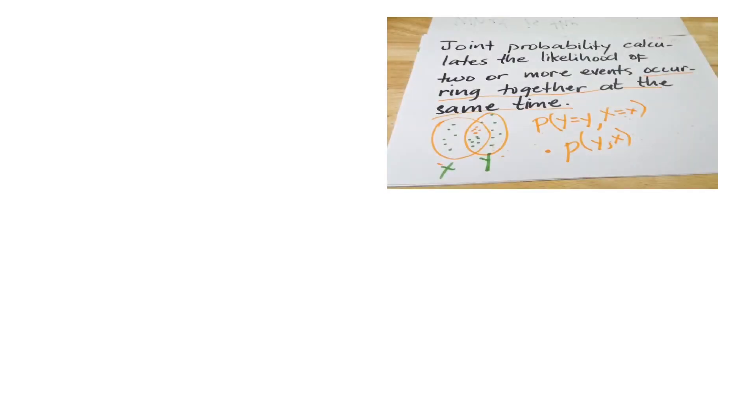Because our last lesson is intimately connected to this session, it is very worth mentioning the meat of joint probability. We have learned that joint probability calculates the likelihood of two or more events occurring together at the same time.